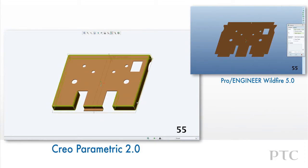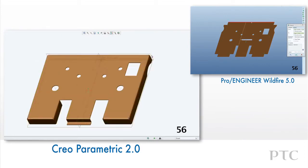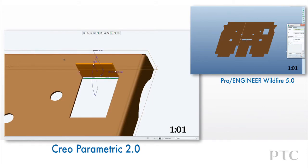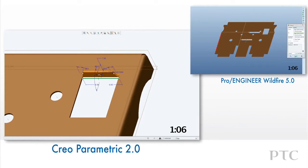Flat walls can now be added and offset from the attachment point by any distance. This allows us to create a tab in this area in one feature rather than the two features it would have taken us in Pro Engineer Wildfire 5.